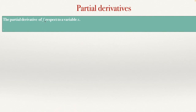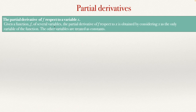The partial derivative of f, a function of several variables, with respect to a variable x — but it could be with respect to whatever other variable, could be with respect to z, to y, etc. If given the function f of several variables, the partial derivative with respect to x is obtained by considering x as the only variable of the function. All other variables will be considered constant. If making the derivative with respect to x, this x is the variable; the y, z, or whatever other variable that appears will be constant.